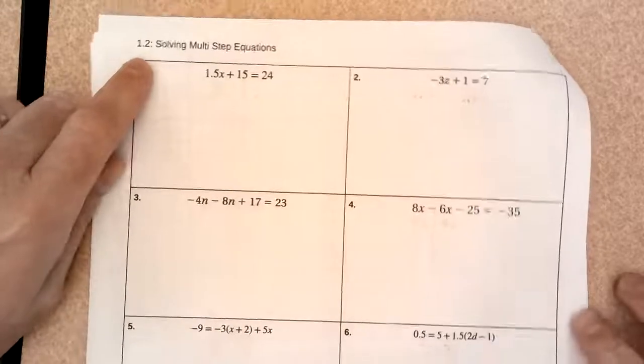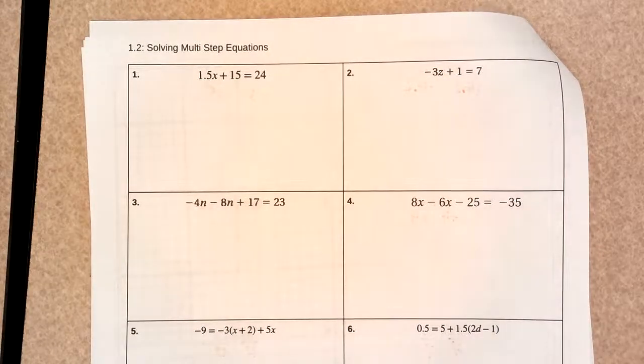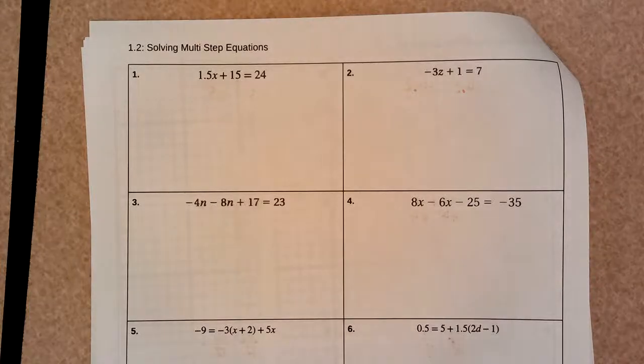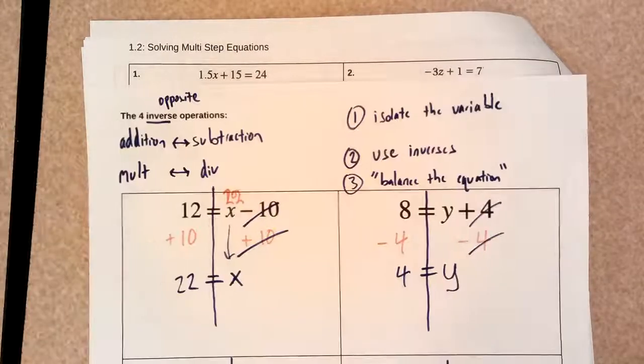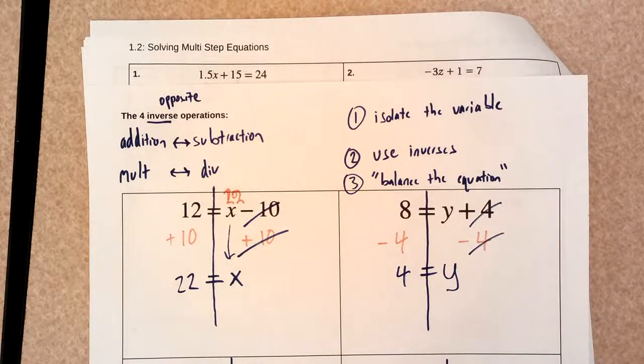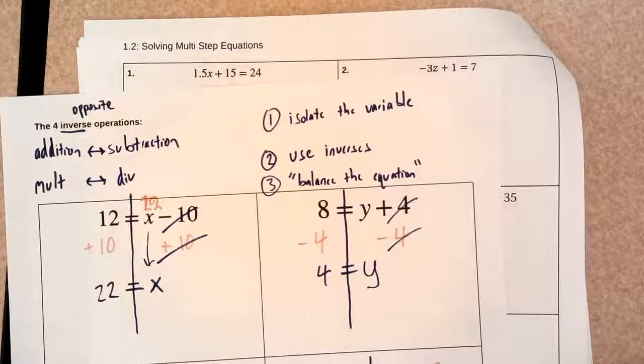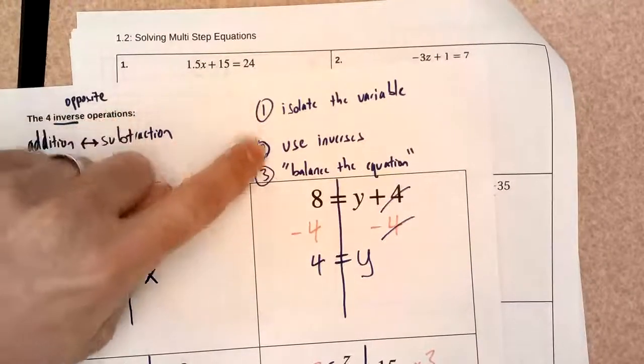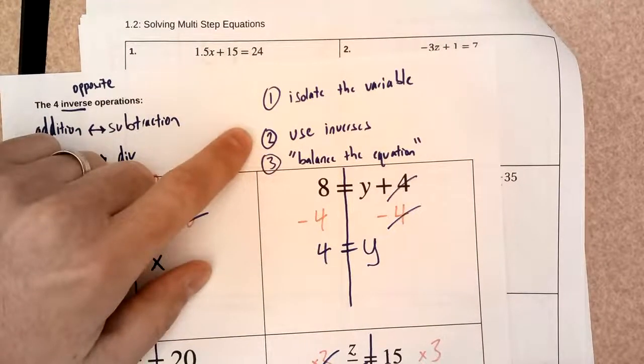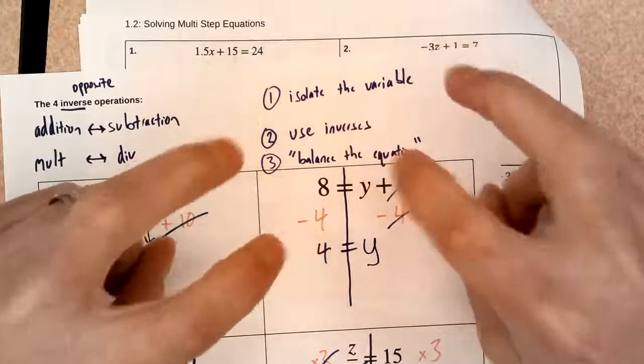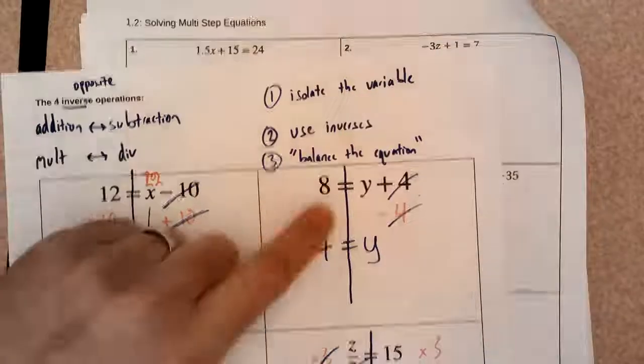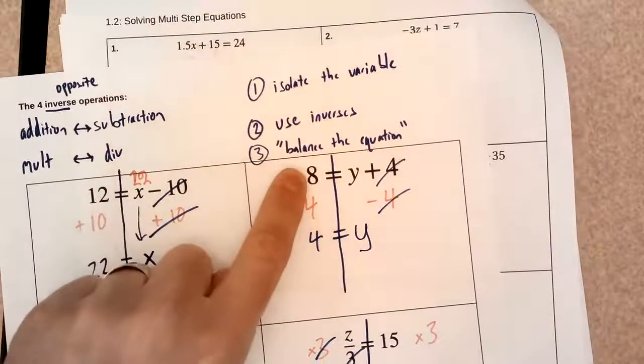Okay team, hey this is 1.2 and we're solving multi-step equations. We've already looked at single step equations. Our steps for a single step equation: isolate the variable, use inverses to undo the equation, and we have to keep the equation balanced.